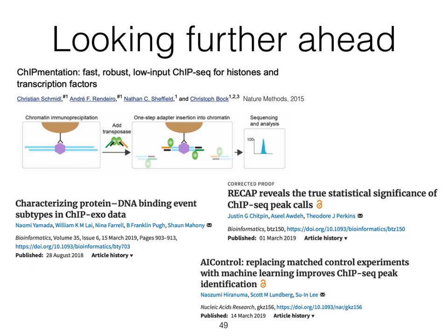To wrap up this lecture, I want to highlight recent articles as an example of a very dynamic evolution of the field. The first one — you might have heard of already — is the use of a transposase enzyme to fragment the DNA. This allows for a one-step fragmentation and adapter ligation into the chromatin, simplifying the library generation procedure.